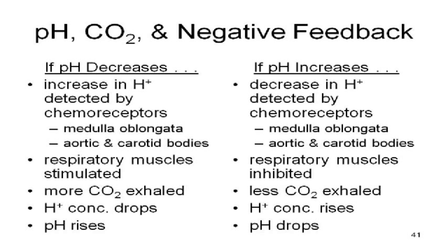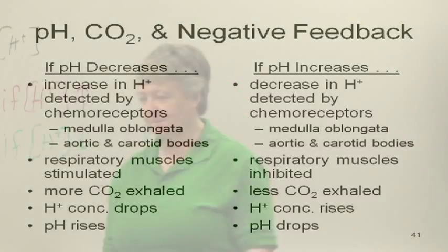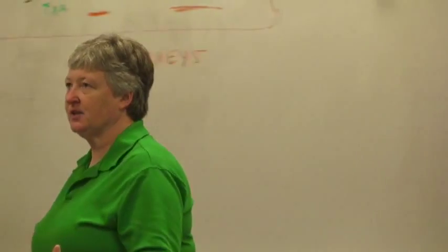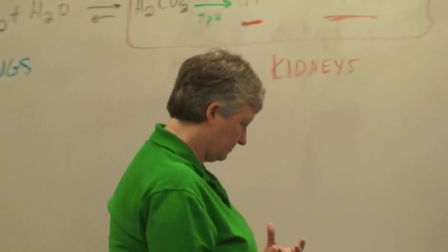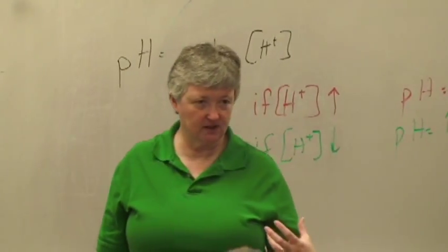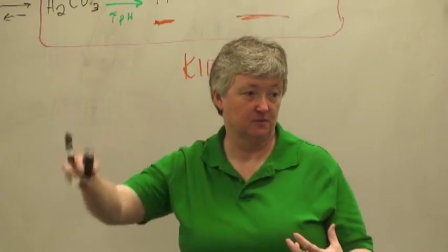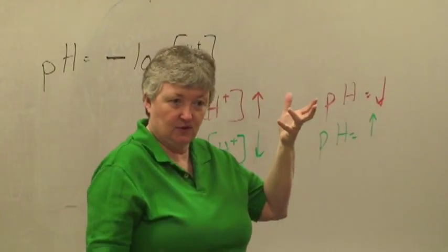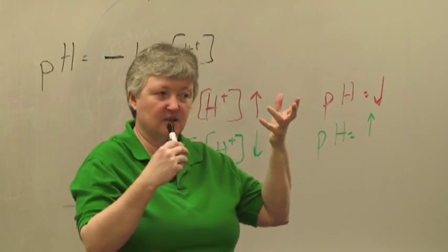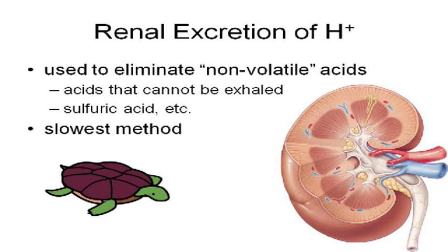If your pH increases, the decrease in hydrogen is detected and your breathing rate is automatically slowed down. Anything that makes you more acidic — drops your pH — is going to make you breathe faster. If your pH drops and you're more acidic, that stimulates breathing because you want to blow off CO2. If your pH goes up, breathing is inhibited — it slows so that you can retain CO2 to bring your pH back down. The kidneys handle non-volatile acids — stuff you can't breathe out. Volatile means it becomes a gas.